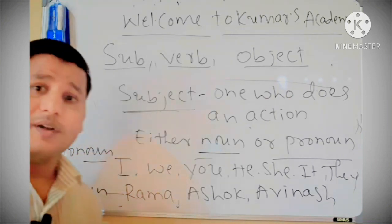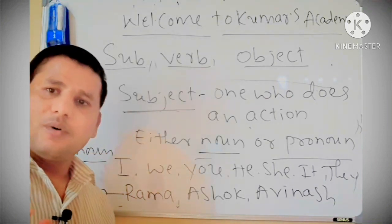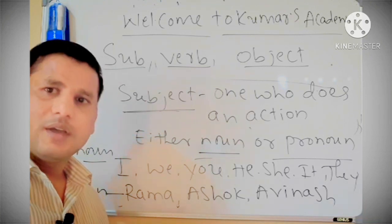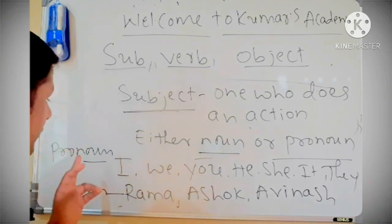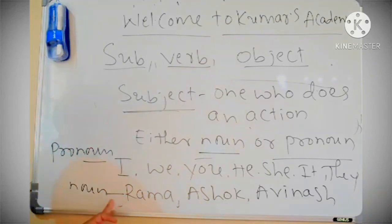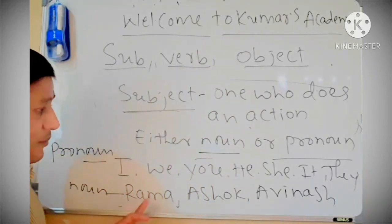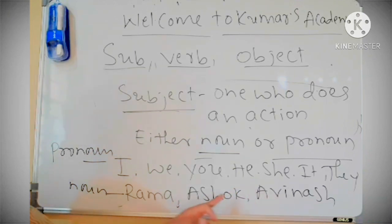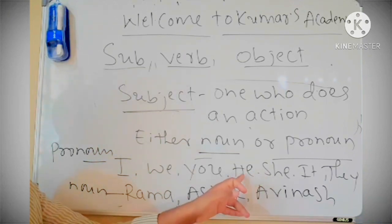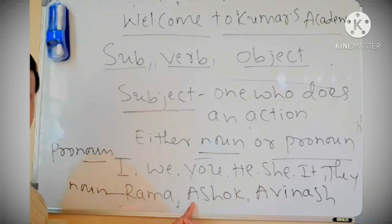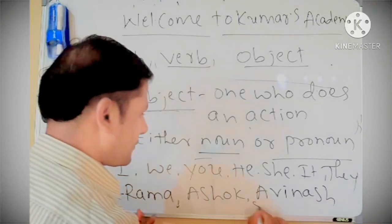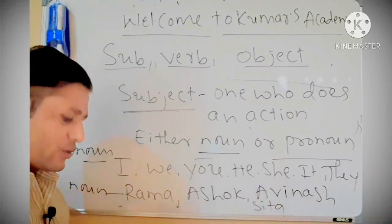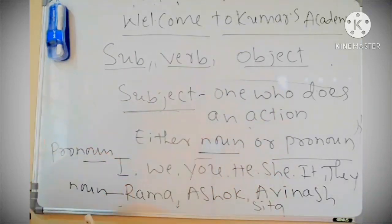What is pronoun? What is noun? Noun is a word which indicates a person, place, thing — that is called noun. And what is pronoun? Pronoun means which is used instead of a noun. Instead of Rama, we use he. Instead of Avinash, there is he. If I wrote Sita, instead of Sita I use she. So this is called the subject.